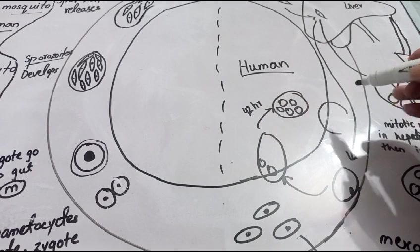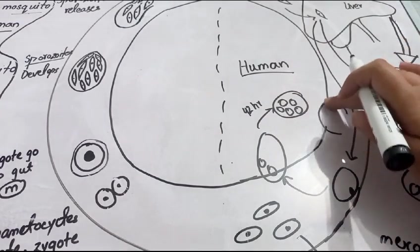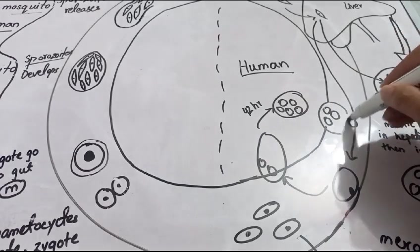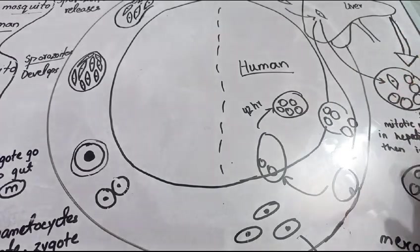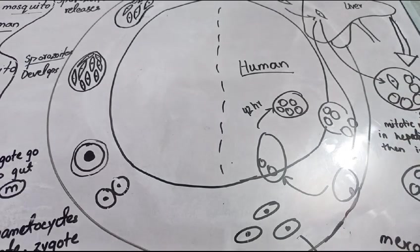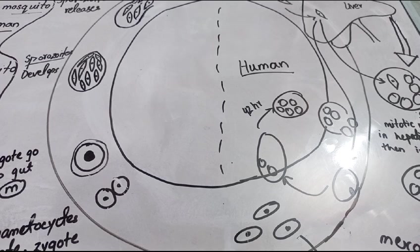When the red blood cell bursts, various kinds of merozoites are released into the blood. These merozoites will then damage other red blood cells in the surroundings and this cycle repeats after 72 hours — the next red blood cell bursts and releases more merozoites. This cycle repeats and the malaria continues.